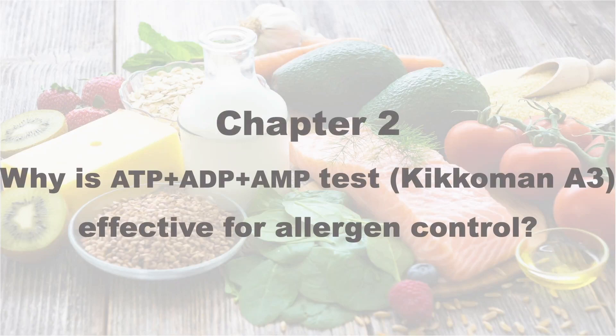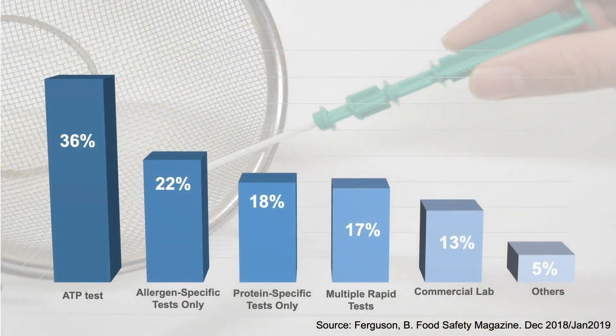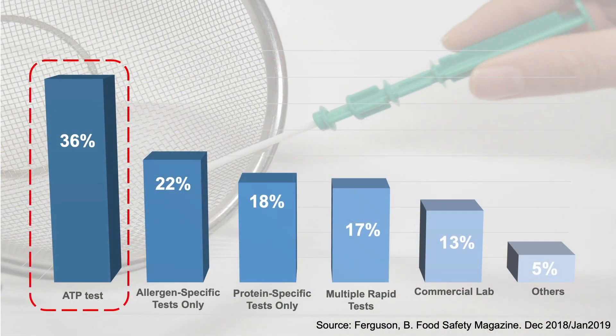Why use the ATP test Kikomon A3 for allergen control verification? In the previous video we explained the importance of validation and verification. We will explain why 36% are using ATP tests and why Kikomon A3 is a better option.